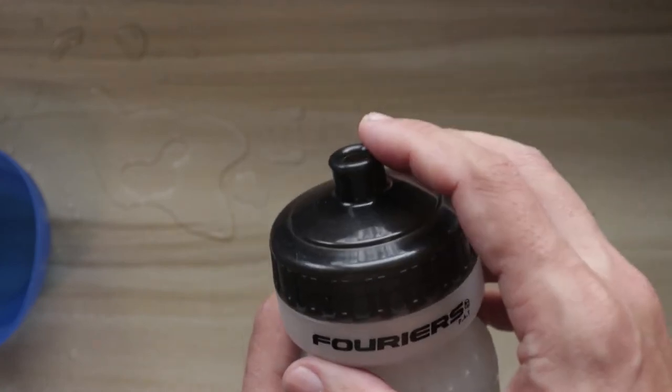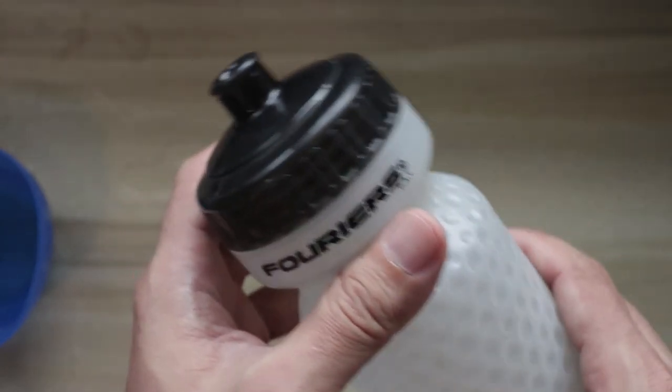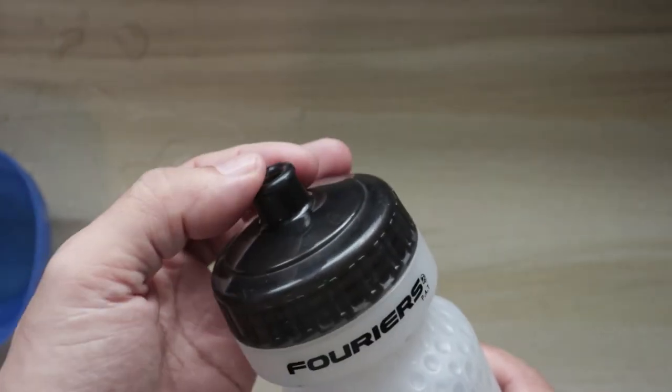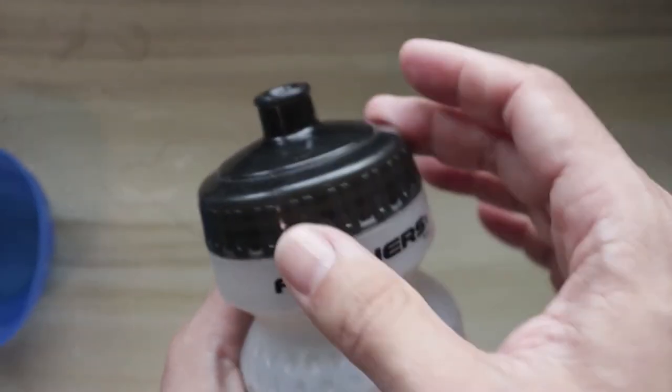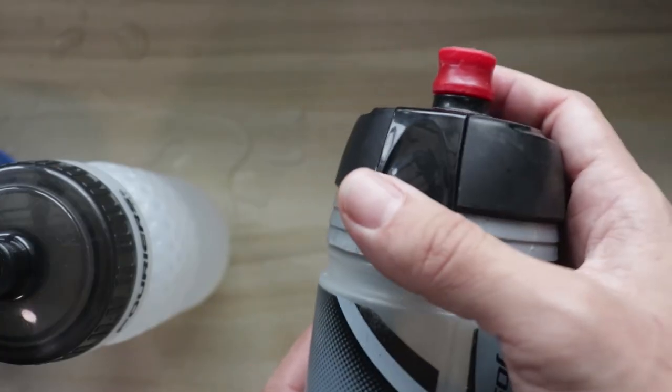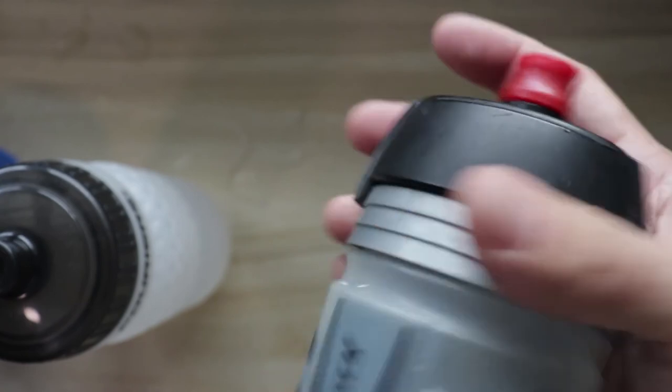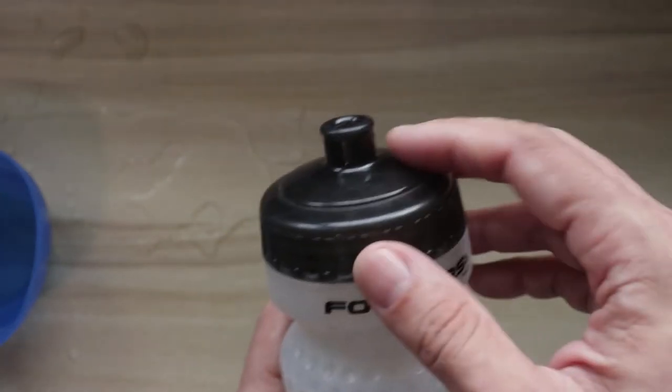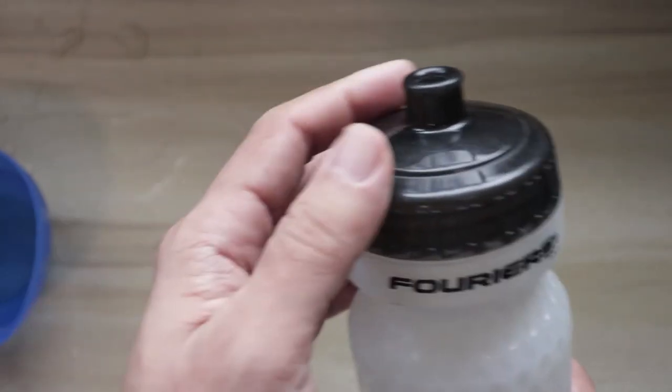I find this is convenient if you're using this bottle for fizzy drinks. If you have gas inside and the pressure starts to build up, after a while the pressure just releases by itself. You don't have to worry about the bottle cap popping off like with other types of bottles. I've had friends who experience popping bottle caps because the pressure builds up too high, but with the Fouriers bottle it's not an issue because the pressure releases on its own when it reaches a certain level.